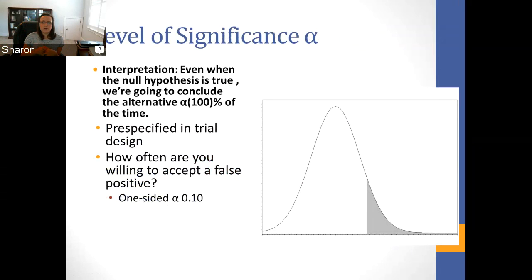If you are instead comparing cardiovascular exercise versus nothing, it's hard to imagine what the poor consequences would be of incorrectly saying that cardiovascular exercise is better for weight loss — so you might be willing to accept 0.1. Again, 0.05 is not a magical number by any stretch of the imagination. As an investigator, I encourage you to really think through what the consequences of that false positive decision are and use that when you're trying to set your level of significance.